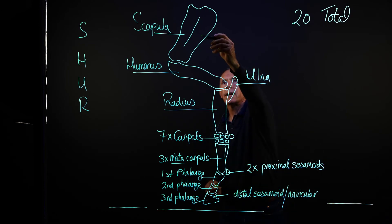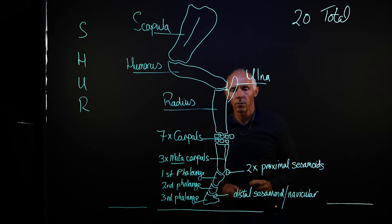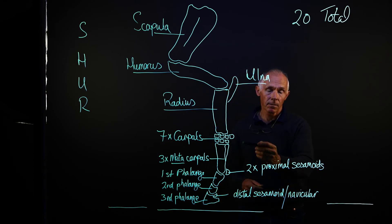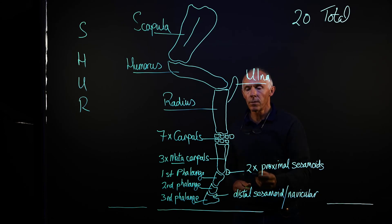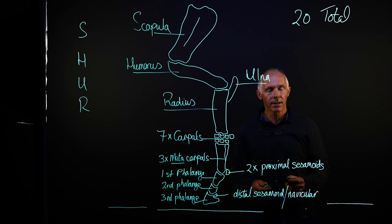So S-H-U-R gives us the four proximal bones. Then we have seven, sometimes eight small bones that form the two rows of the carpal joint. We have three metacarpals, also known as the cannon bone and the two splint bones. We have the two proximal sesamoids, then we have the long pastern or first phalange, the short pastern or second phalange, the coffin bone or third phalange, and the navicular bone or distal sesamoid. And that gives us twenty bones in total.